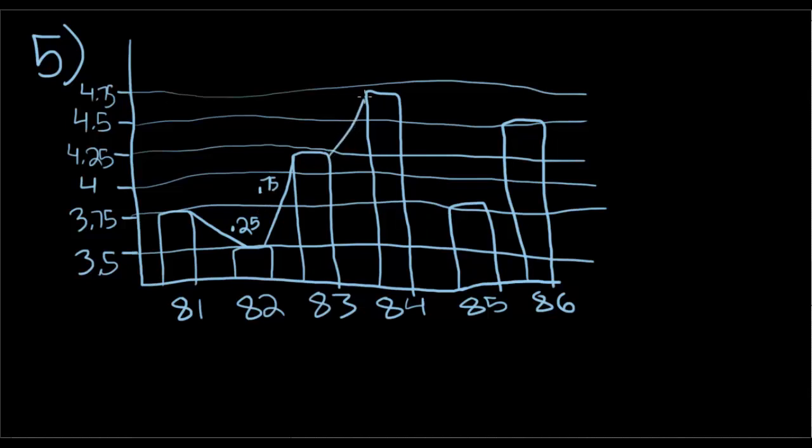From 83 to 84, there is a 0.5 change. From 84 to 85, that is 4.75 to 3.75, there is a 1 change. From 85 to 86, there is a 0.75 change. So the greatest change was between year 1984 and 1985, and that is choice D.